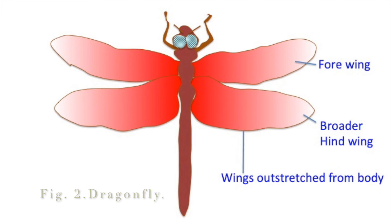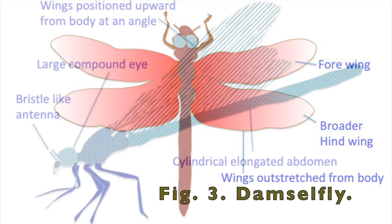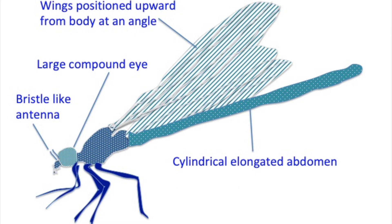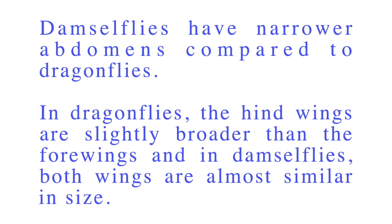Damselflies hold their wings at an angle directed upward over the body. Damselflies have narrower abdomens compared to dragonflies. In dragonflies, the hind wings are slightly broader than the forewings, while in damselflies both wings are almost similar in size.